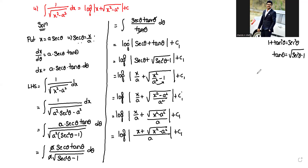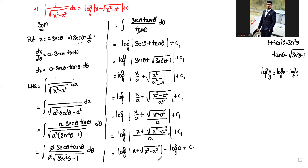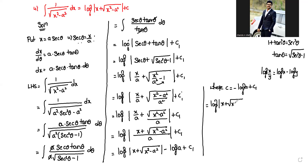Using the log formula log(x/y) = log x minus log y, we write log mod x plus square root of x square minus a square minus log a plus c1. Setting c equal to minus log a plus c1, we get log mod x plus square root of x square minus a square plus c, which equals RHS. This is the answer for this property.